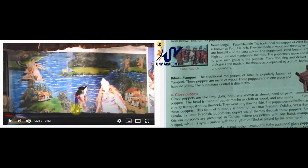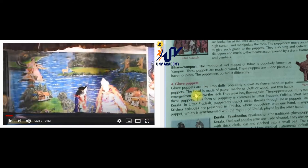This is a play of Radha and Krishna shown very nicely through rod puppets. Next we have Bihar Yampuri - this is also a form of rod puppets. The traditional rod puppet of Bihar is popularly known as Yampuri. These puppets are made of wood in one piece and have no joints. The puppeteers control it differently, holding it in a special way.